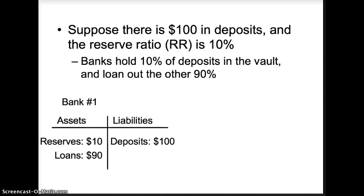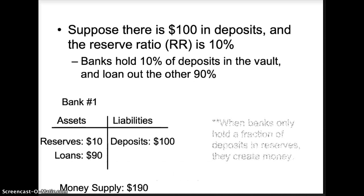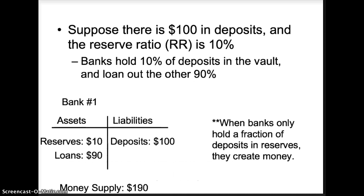Looking at the T-account: liabilities show $100 in deposits; assets show $10 in reserves and $90 in loans. Total assets sum to $100, and liabilities exactly balance at $100. Now, money supply is $190 — one customer deposited $100 in the bank and another customer received a loan of $90. Combined, the two customers have a total money supply of $190. When banks hold only a fraction of deposits in reserves, they create money.